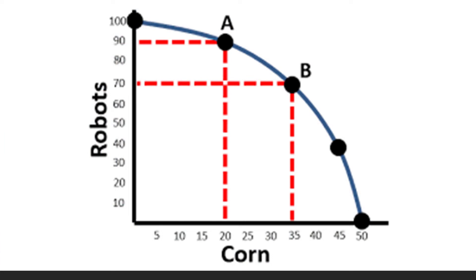On the graph I pulled up, the two products are robots and corn. Now, if I'm a manufacturer, chances are I'm not making robots and corn — the whole point is not to focus on what the products are, but to work with the information. What we can see here is that if I produce 100 robots, I could produce zero corn. And if I were to produce 50 corn, I would not be able to produce any robots.